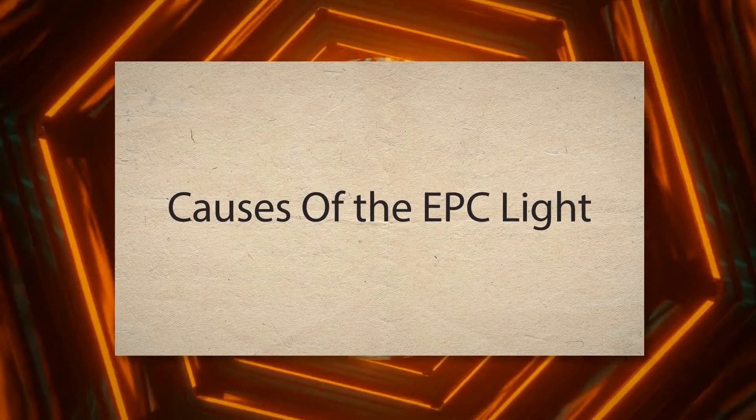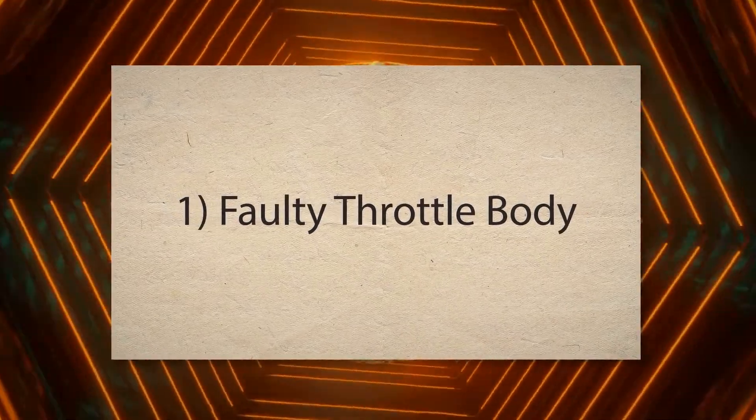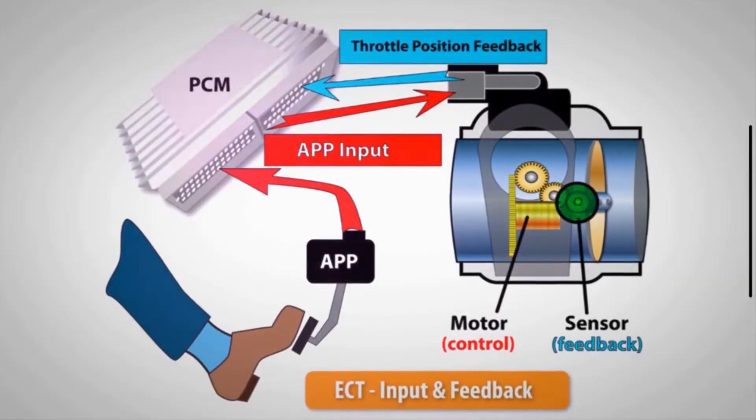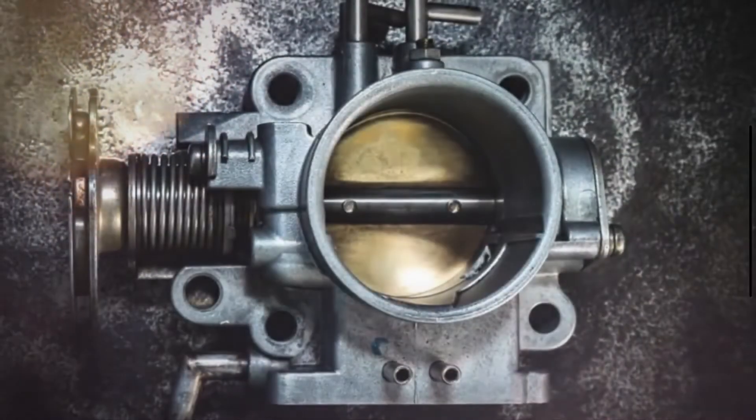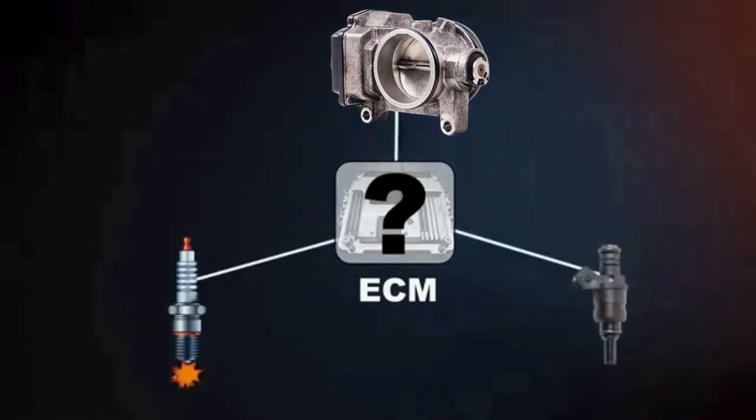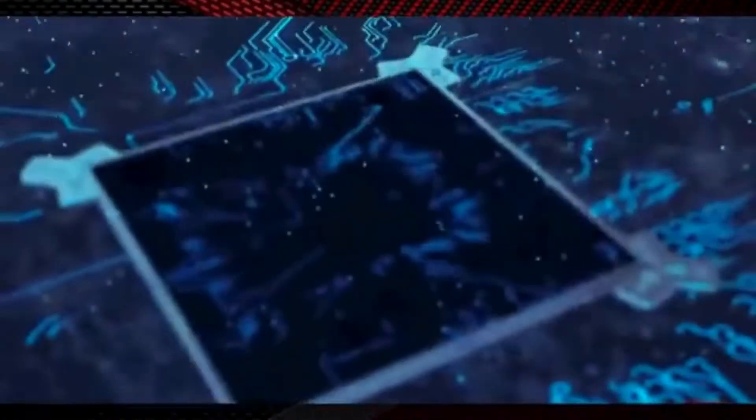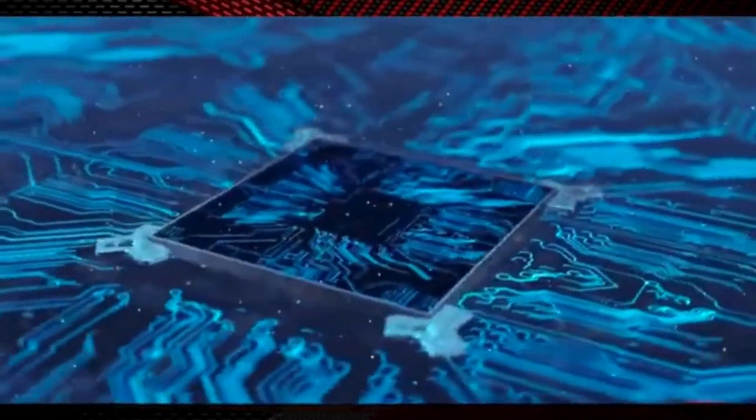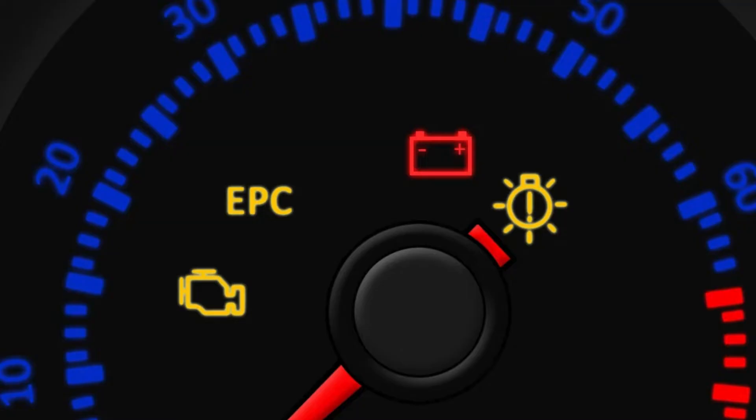Causes of the EPC light. First, faulty throttle body. The throttle body controls the amount of air that enters the engine by opening and closing the throttle valve. If the throttle body is dirty, sticking, or malfunctioning, it can send incorrect signals to the engine control unit, disrupting the air-fuel mixture. This inconsistency triggers the EPC light as the ECU detects an issue with the throttle system.